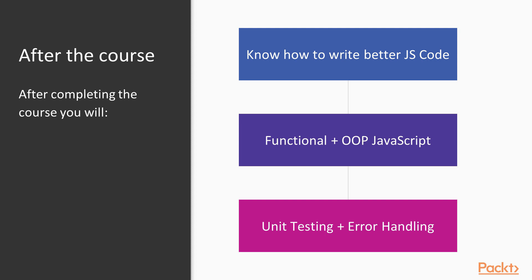After finishing this course you will be able to write better and cleaner JavaScript code, and modules will no longer confuse you. You will have learned strong skills regarding both functional and object-oriented JavaScript. You will also learn how unit testing works and how to set up top-notch error handling in your applications. The course will focus on concepts and principles, so the examples will be kept simple. However, you will be able to apply what you learn to a great variety of projects, from small ones to large-scale enterprise applications.